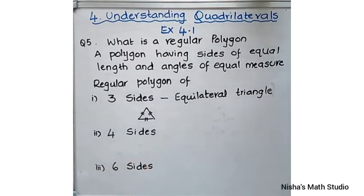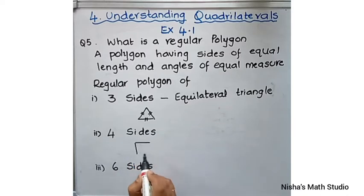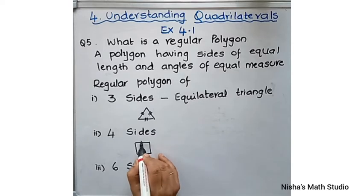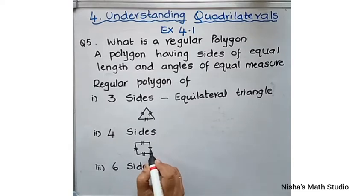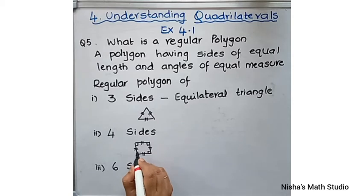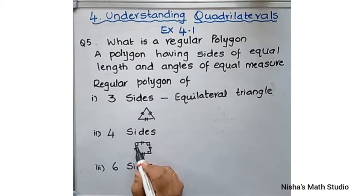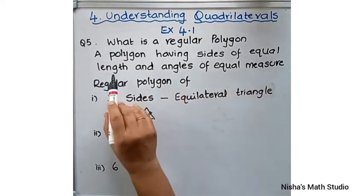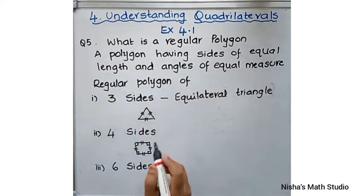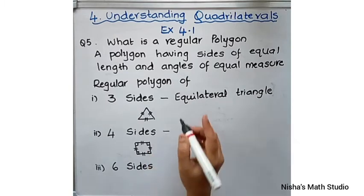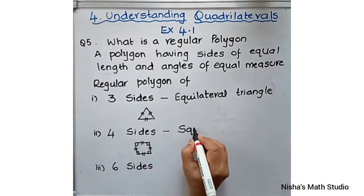Next, four sides. A four-sided polygon is called a quadrilateral. Regular means all the sides and angles should be the same. If all four sides are the same in a quadrilateral, it is called a square. In a square, all the angles are also 90 degrees, so it is equilateral and equiangular — sides of equal length and angles of equal measure. So the four-sided regular polygon is called a square.